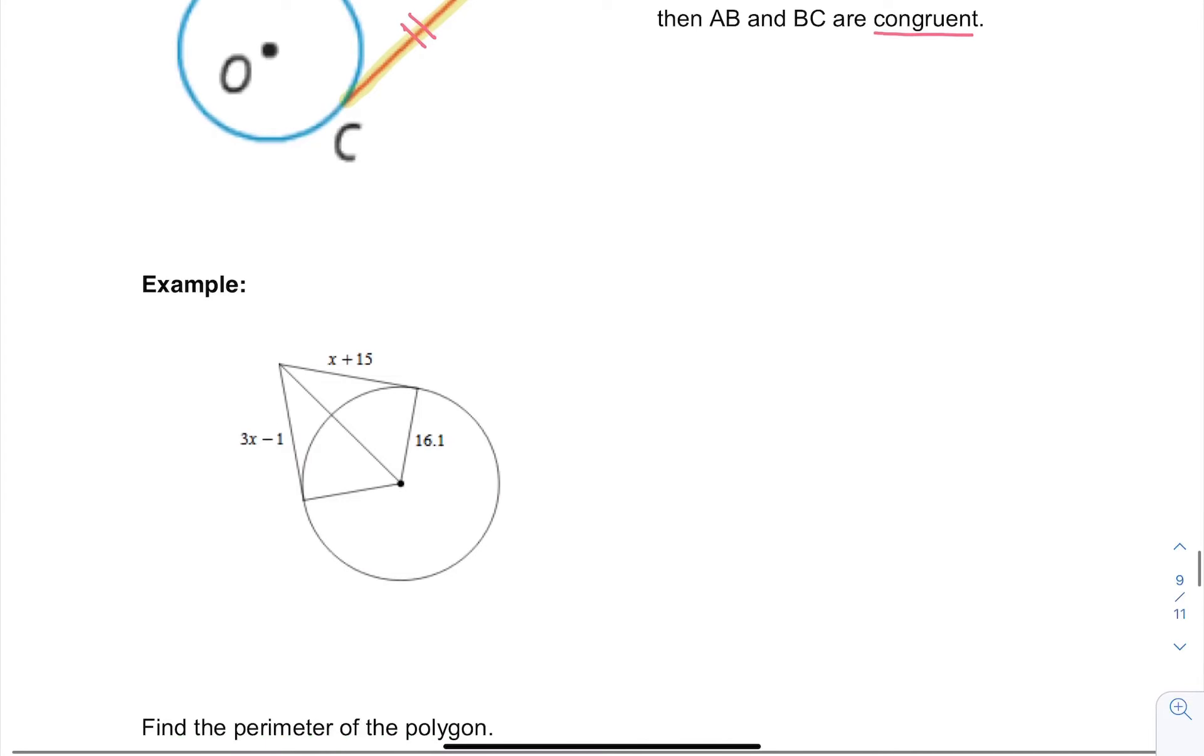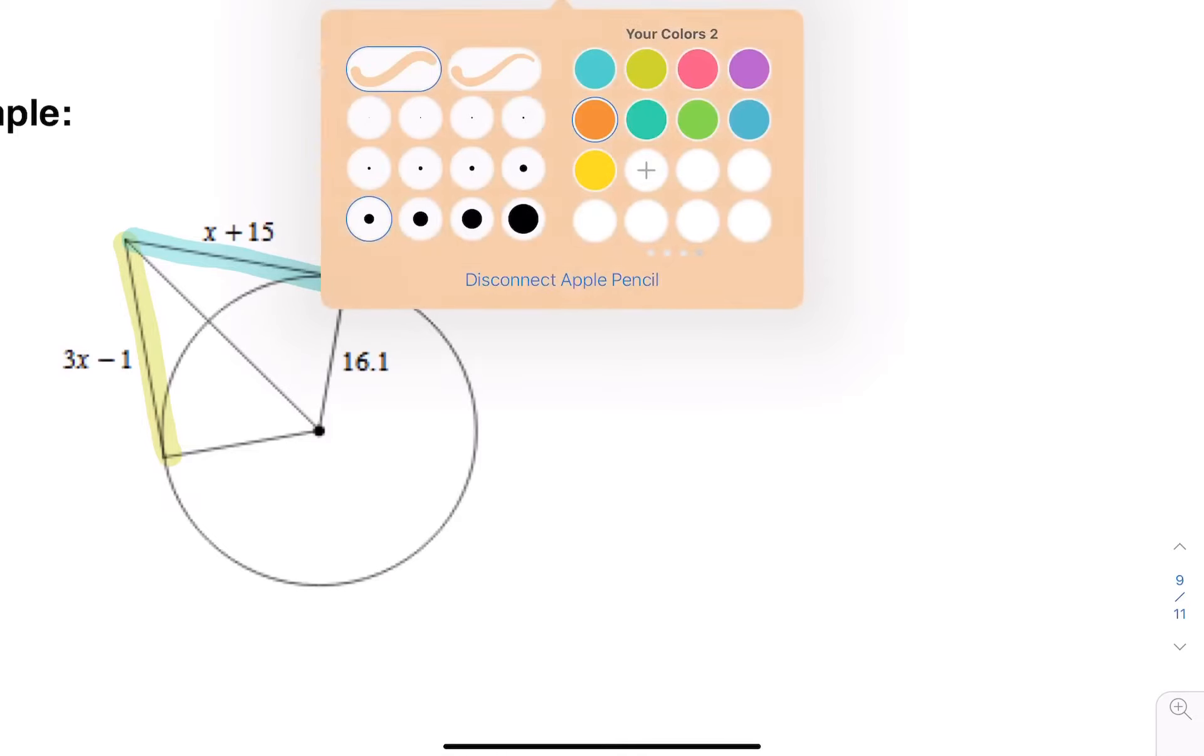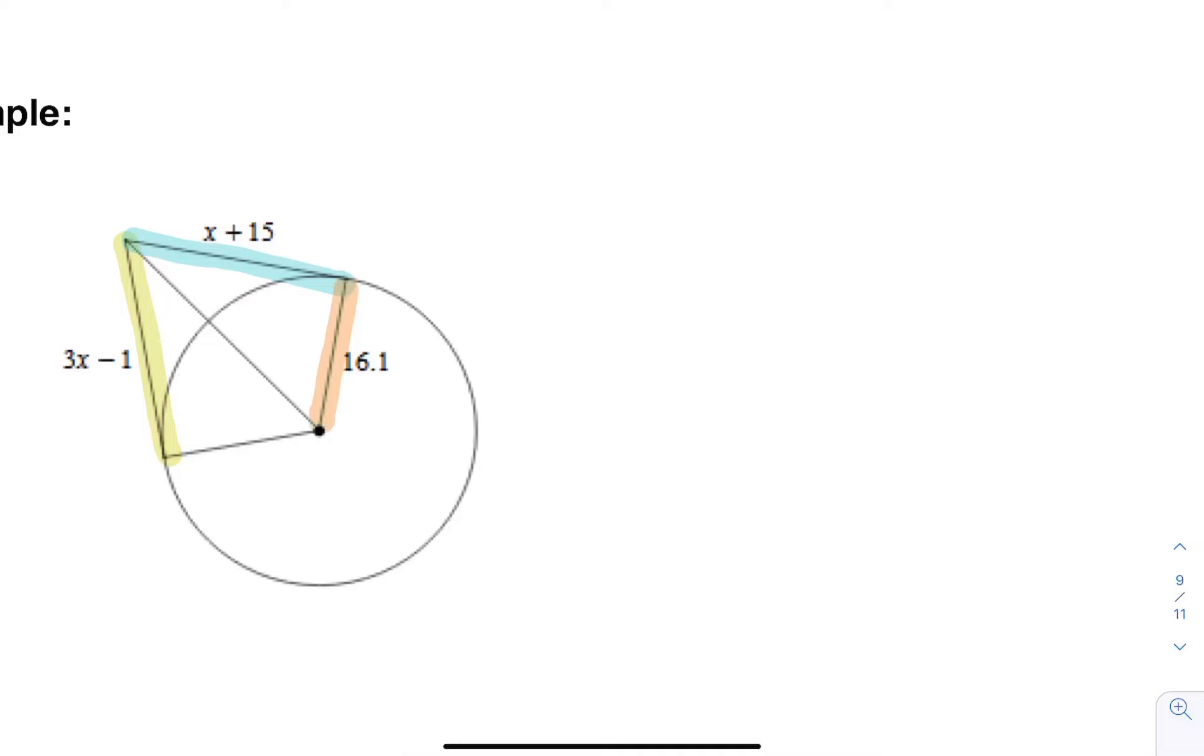Let's look at this first circle. We are trying to solve for X. It might help to highlight your tangent lines. I see a tangent line there and a tangent line here. Then I see my radius is 16.1. Sometimes these problems have extra information, but you don't actually need it. This 16.1 is actually not even needed for this problem.